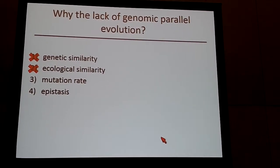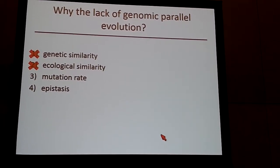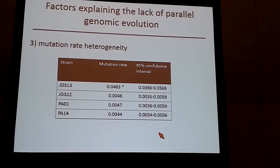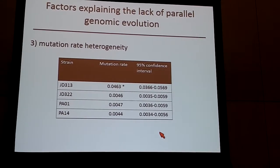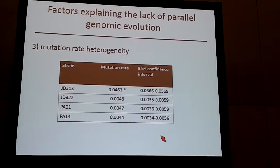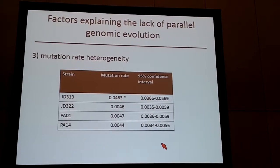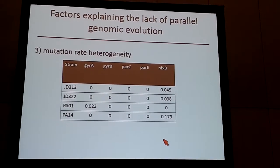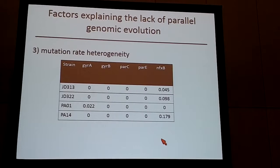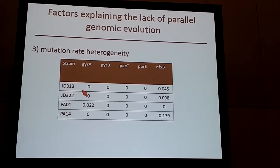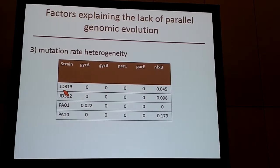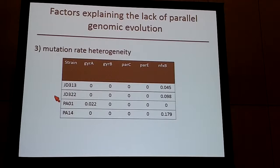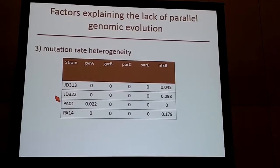We went back to the drawing board and thought about more proximate causes — mutation rate and epistasis. We did a fluctuation assay to assess the overall genomic mutation rate for these strains, and found that the strain with the lowest degree of parallel evolution had a significantly higher mutation rate. To understand this further, I wanted to measure mutation rate at specific genes, not just overall. In the fluctuation assay, we measured spontaneous mutants in response to ciprofloxacin, then PCR'd those resistant mutants from each strain to see if resistance mutations were within the known genes. We expected to see many in PA14 and almost none in 313 and 322 — we saw differences, but not the expected pattern, so we're not entirely convinced this is the whole story.